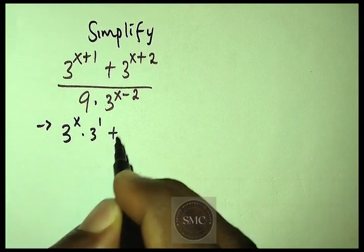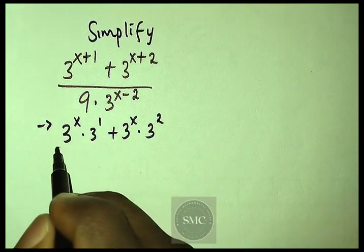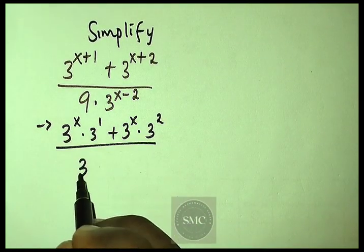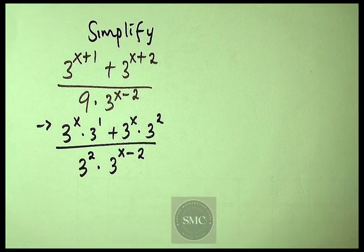x dot 3 to power 1, plus 3 to power x dot 3 to power 2, over 3 to power 2 dot 3 to power x minus 2. That is from the law of indices.